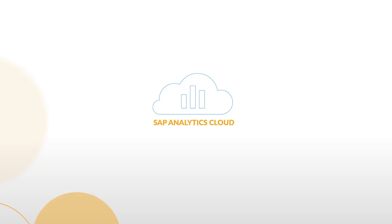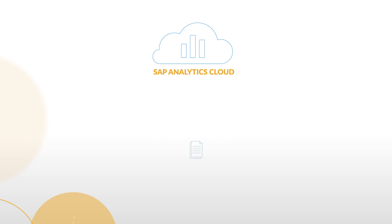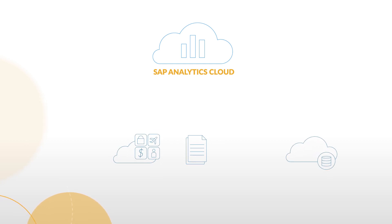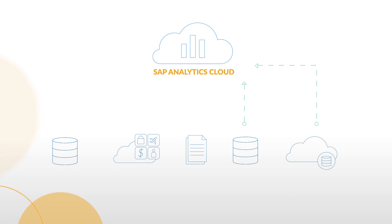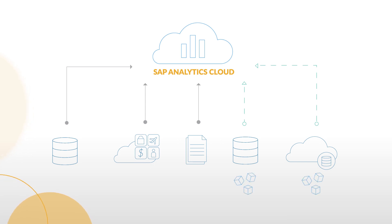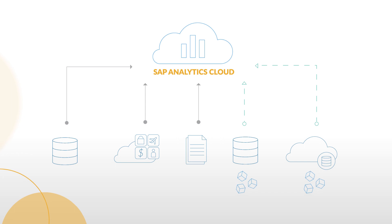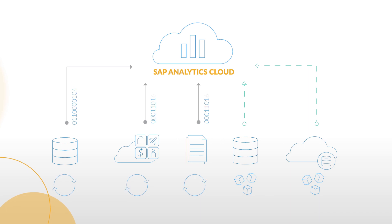To recap, you can connect Analytics Cloud to data in a spreadsheet, a cloud application, or an on-premise system. The two connection types are live data connections and import data connections. Live data connections are updated with new data in real-time and use the models that already exist in your source system. Import data connections must be refreshed with new data and are ideal for data preparation and blending scenarios.